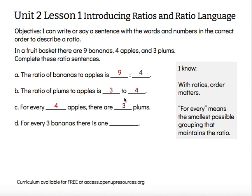Letter D says: for every three bananas, there is one of something. I know the basket has nine bananas, so my grouping changed. I divided nine by three, splitting it into three smaller groups — nine divided by three gives three groups of three bananas. If I divide four apples by three, I'd have four-thirds of an apple per group, and I don't want to cut an apple into thirds. If I take three plums and split into three equal groups, there is one plum in each group. So: for every three bananas, there is one plum.